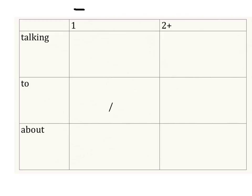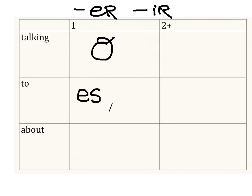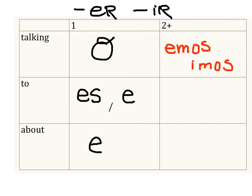Let's quickly review our endings for verbos that end in ER and verbos that end in IR. The yo form for both verbs is O. The tú form, talking to one person casually, is ES. For usted, the more formal form, you add E. For él or ella, talking about one person, you use E. Here's the big difference in the plural column: for an ER verb we have EMOS, but for an IR verb we have IMOS — that's where you really need to remember the difference. For ustedes and ellos, talking to or about a group, both use EN. Alrighty, you're all done. Adiós.